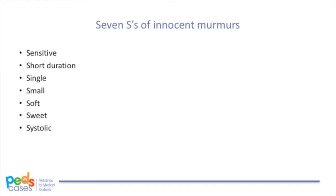In addition to the features of the murmur on auscultation, we need to look for symptoms and signs on a history and physical exam that would raise concern for a pathological murmur. These features include respiratory difficulties, cyanosis, poor feeding, poor growth, syncope, family history of congenital heart disease or sudden cardiac death, abnormal vital signs, diminished or absent femoral pulses, diastolic or pansystolic murmur, high intensity murmur of grade greater than or equal to 3, increased murmur intensity when the child is in an upright position, harsh quality of the murmur, abnormal S2 — for example, not physiologically split — and extra heart sounds such as clicks or gallops.